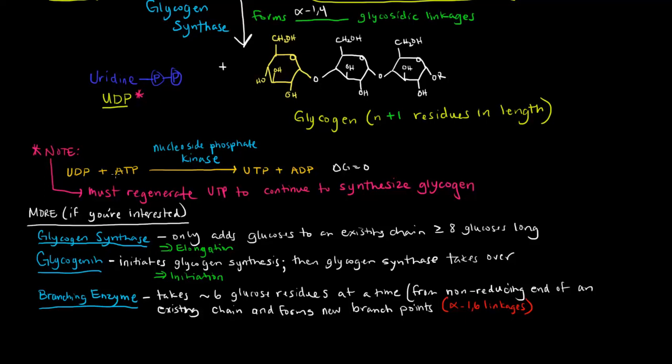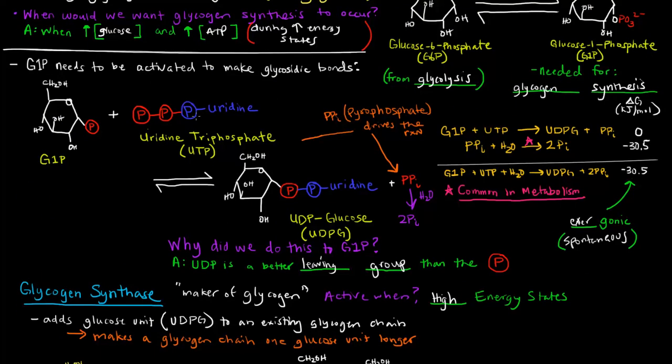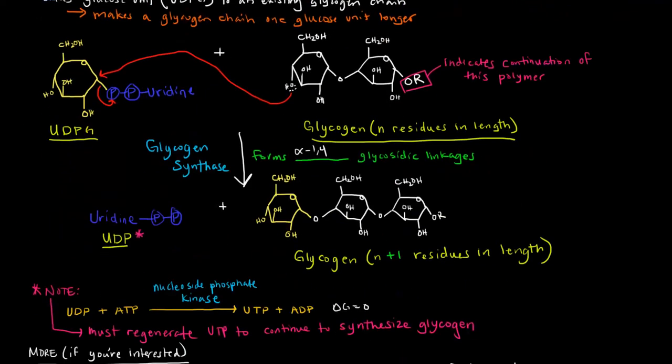Basically the ATP gives the UDP a phosphate. This thing has two phosphate groups, ATP has three phosphate groups. This ATP gives up a phosphate to the UDP to regenerate UTP, and then we're left with an ADP. So the purpose of this is we must regenerate UTP to continue to synthesize glycogen. We need to create more UDPGs, so we need more UTPs around. We need more of these so that we can have this reaction occur again. This is a requirement for that activation step.